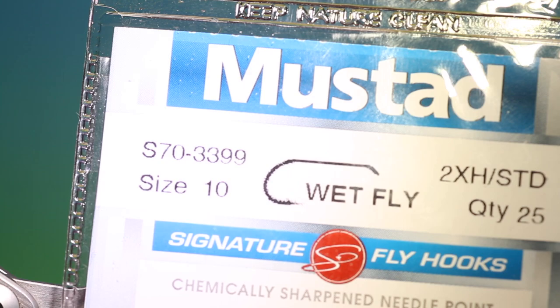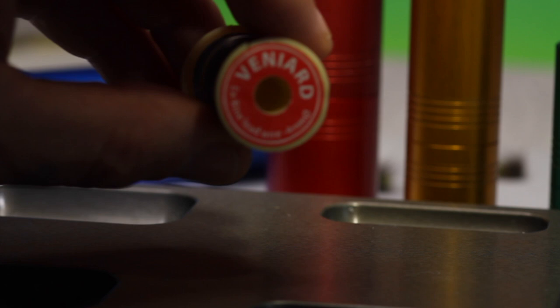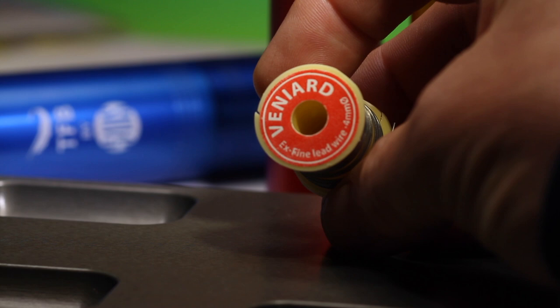We'll start with the Mustard S70 Wetfly size 10. It actually has a special lead wire technique. We need a length of extra fine lead wire like so, and we need something round and hard.